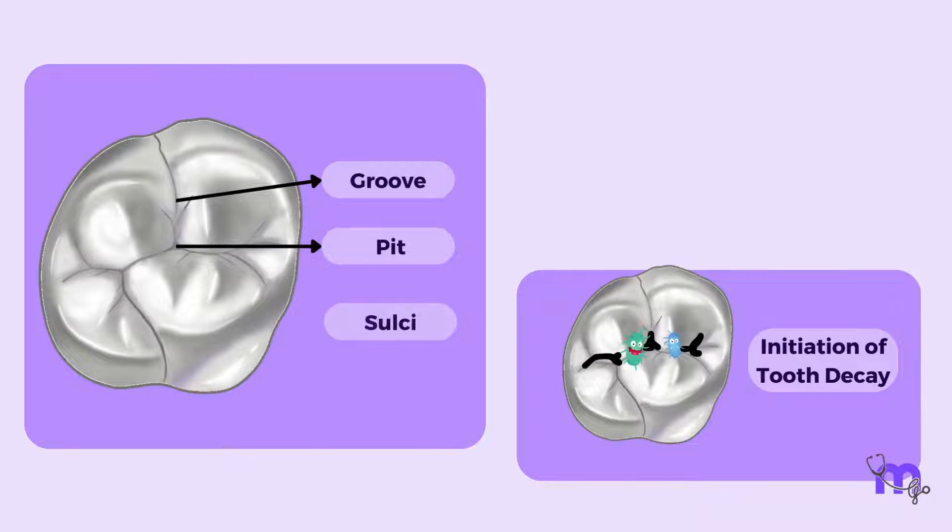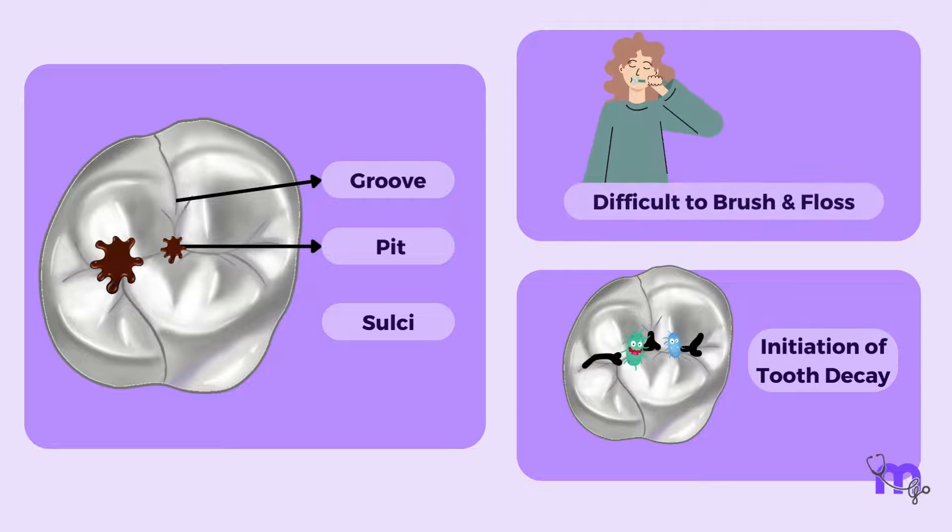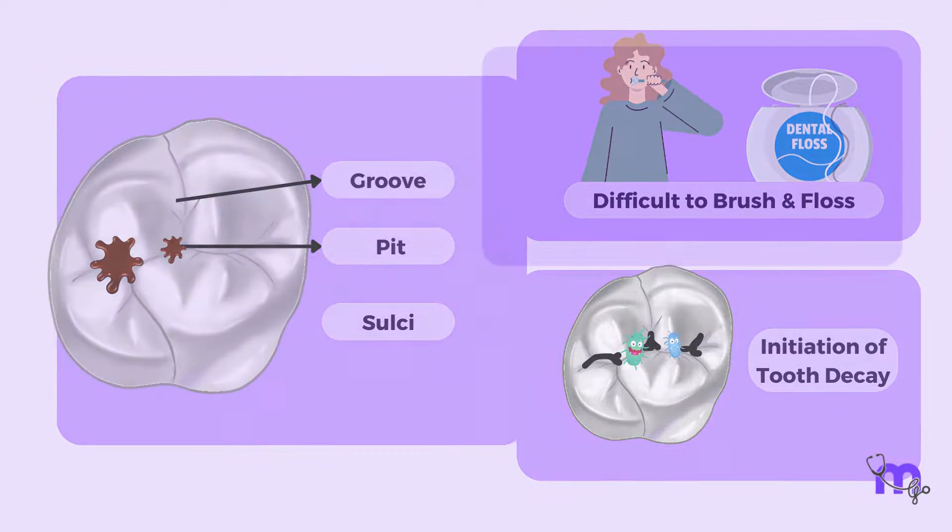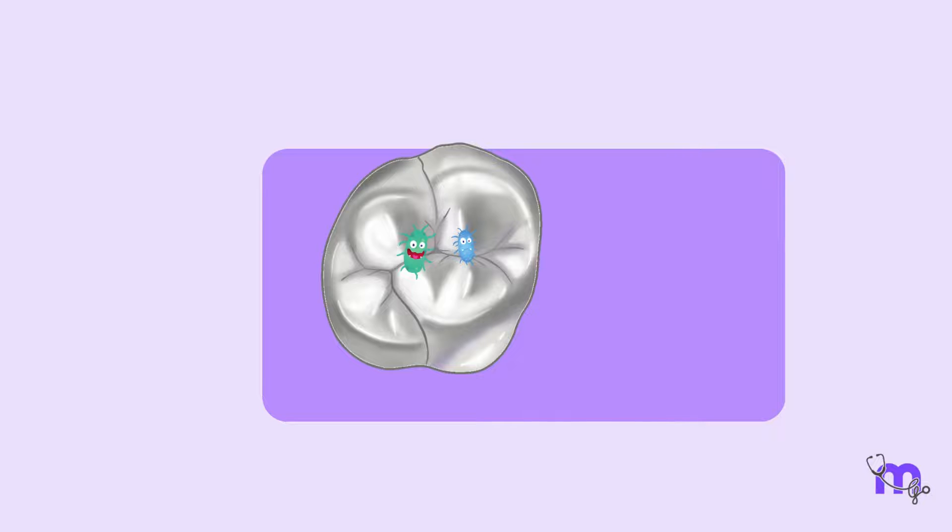These grooves, pits, and sulci are areas where food, especially sticky food, gets stuck. Because of their shape and location, it can be challenging to effectively clean these areas through regular brushing and flossing. This creates an environment conducive to bacterial growth and eventually leads to the initiation of tooth decay. Thus, care should be taken to brush these areas diligently.